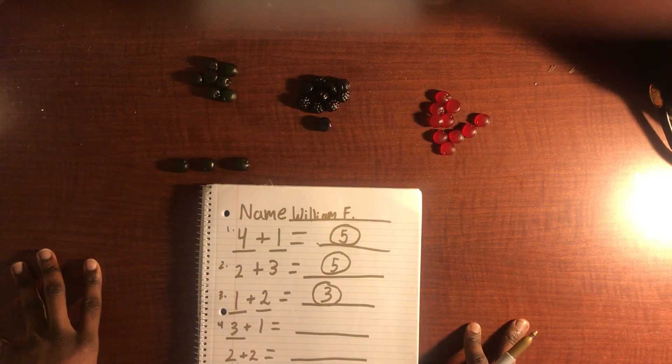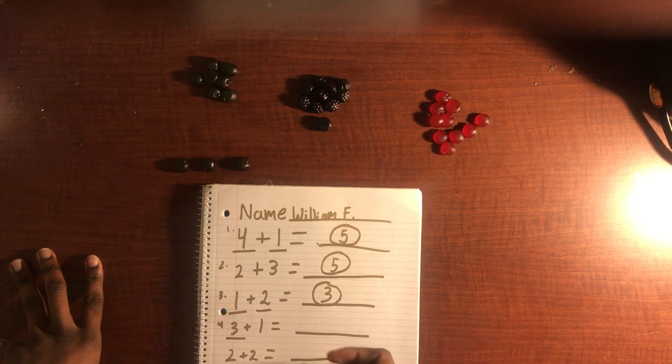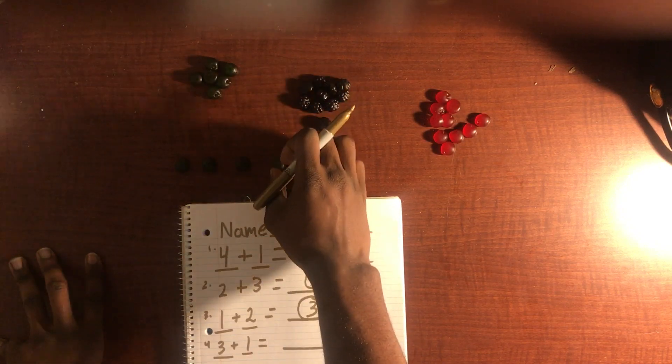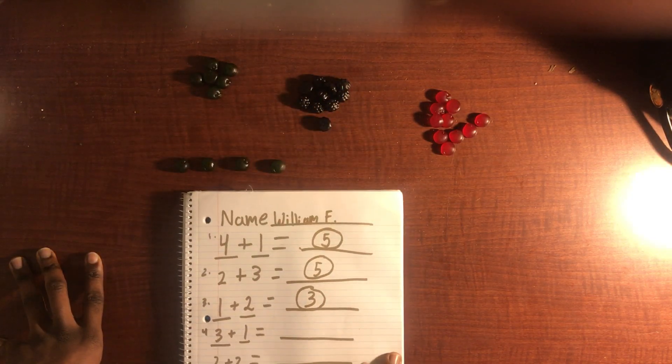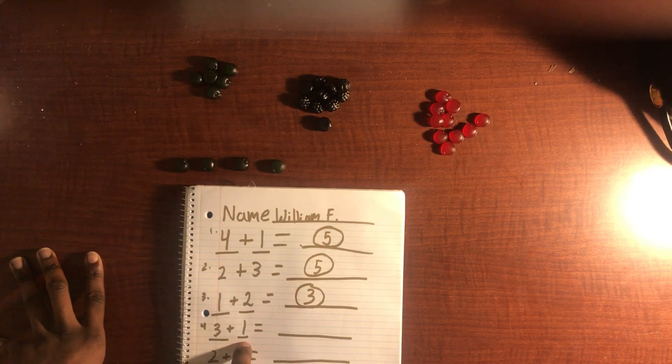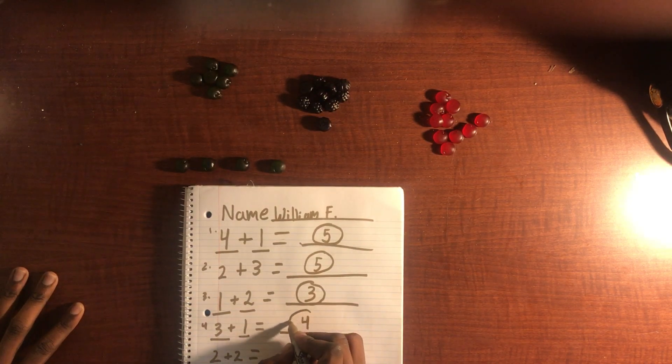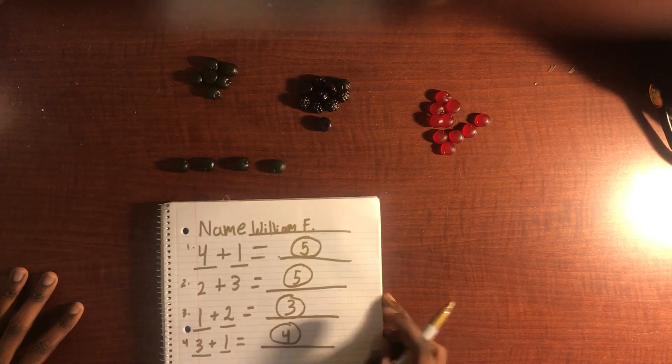So we've got three green gummies. We're going to add one more, correct? So three plus one. So we add three to our total already. We're adding one more, so we're going to end up with four. Four green gummies.